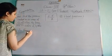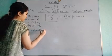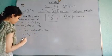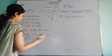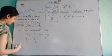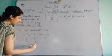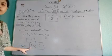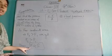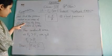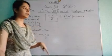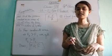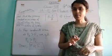Therefore, for constant area, as F2 is greater than F1, we got P2 is greater than P1. Thus we can conclude P is directly proportional to F — if F increases then P increases, and if F decreases then P decreases. If F is constant, pressure is inversely proportional to area. If area is constant, pressure is directly proportional to force.